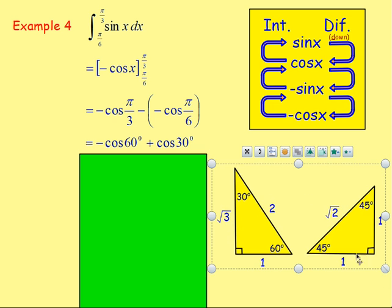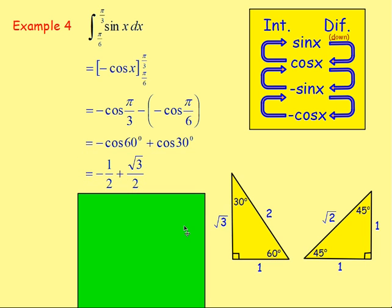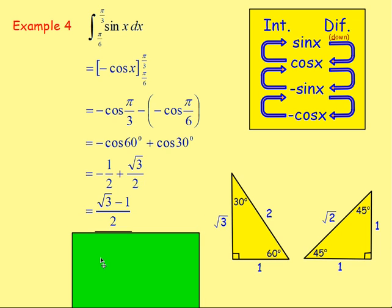Use your exact value triangles — make sure you remember these. So we have negative 1/2 plus √3/2. The denominator is the same, so we just add the numerators: negative 1 + √3. Some people prefer to write the positive term first, so instead of negative 1 + √3, you could write √3 − 1. As long as the 1 is negative and the √3 is positive. Our final answer is (√3 − 1)/2.